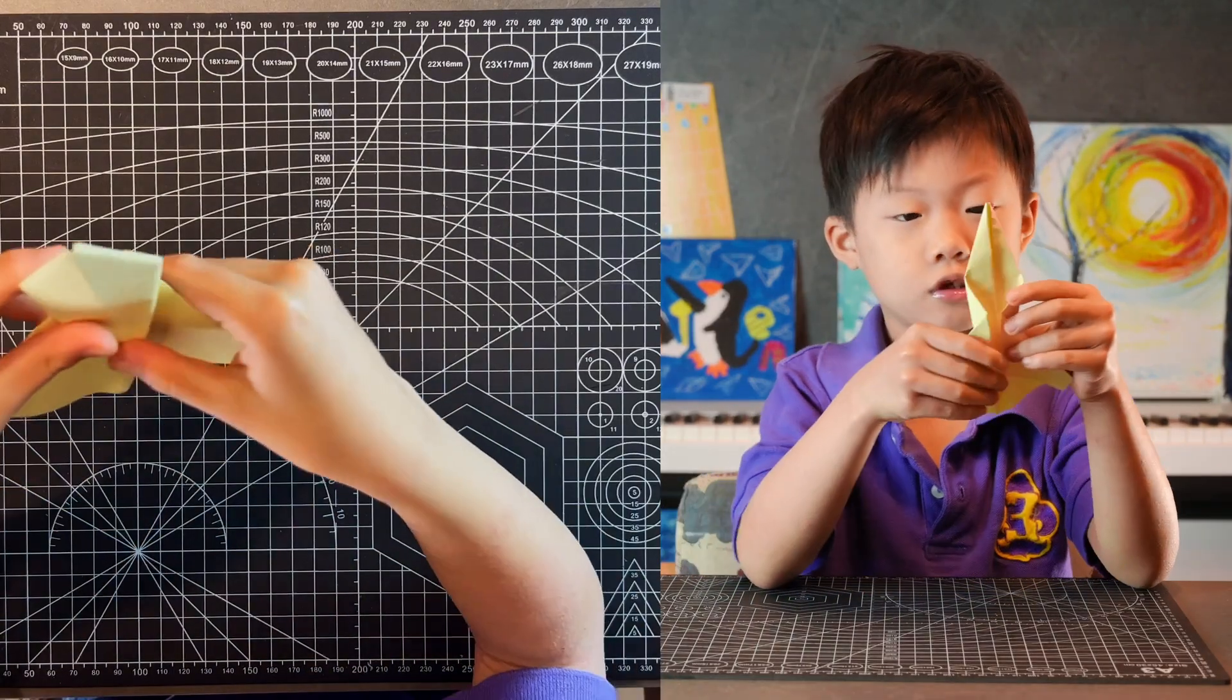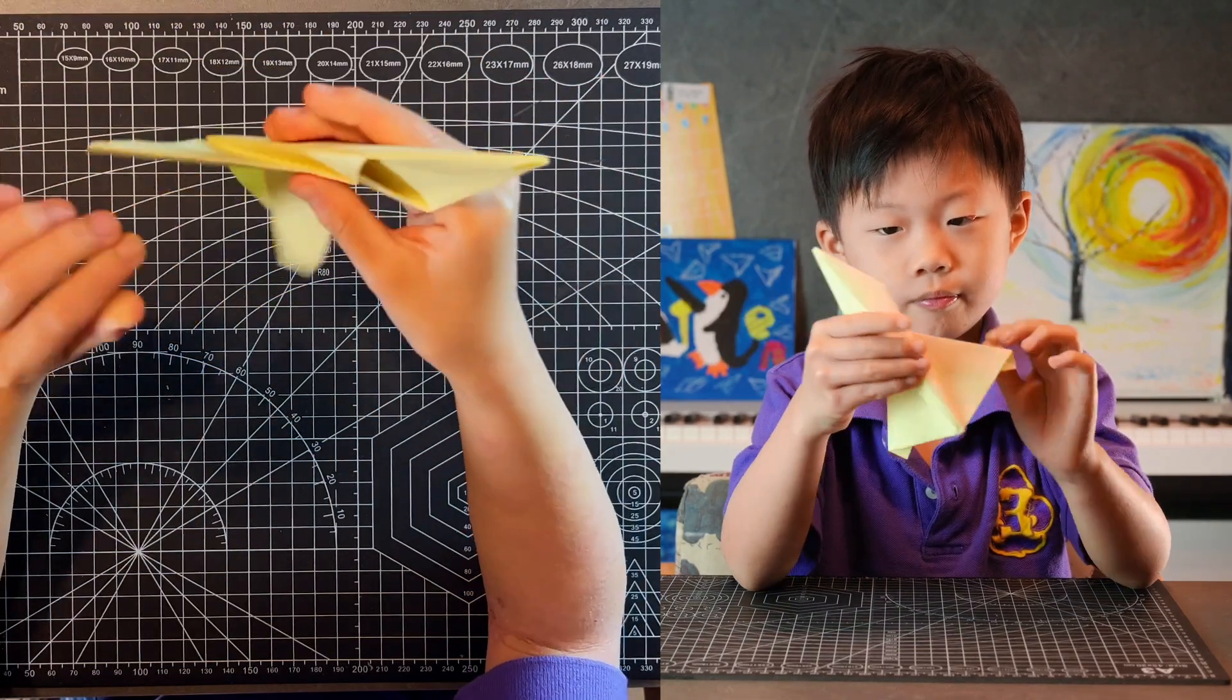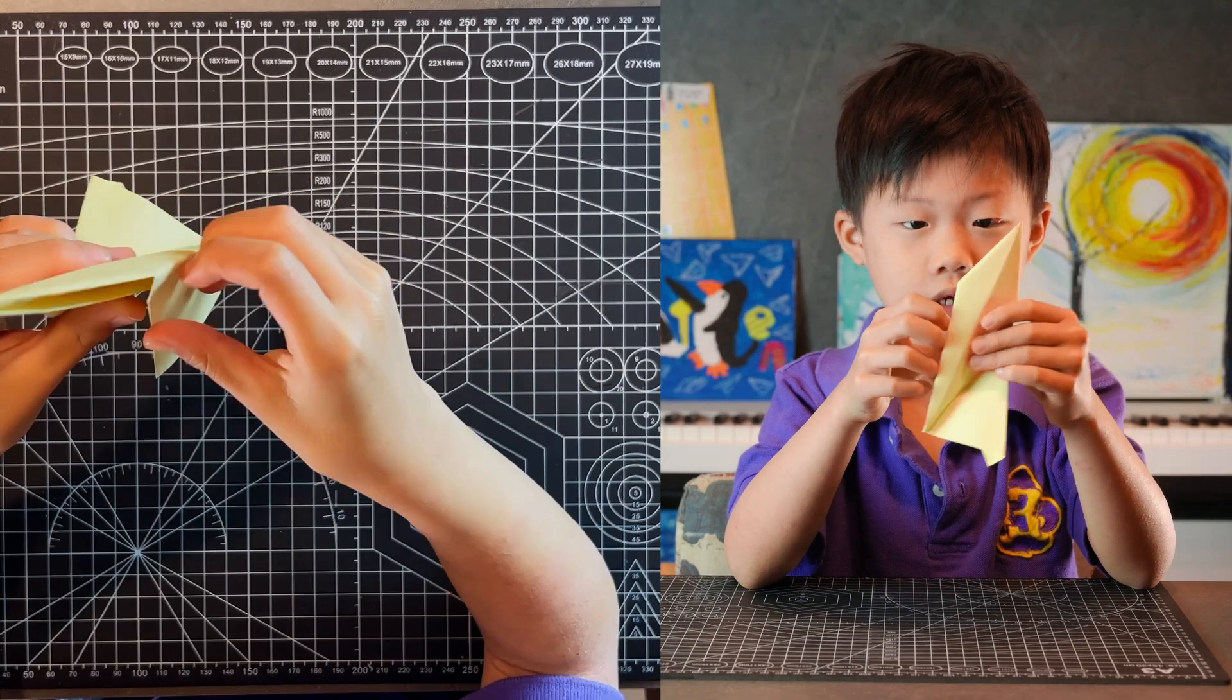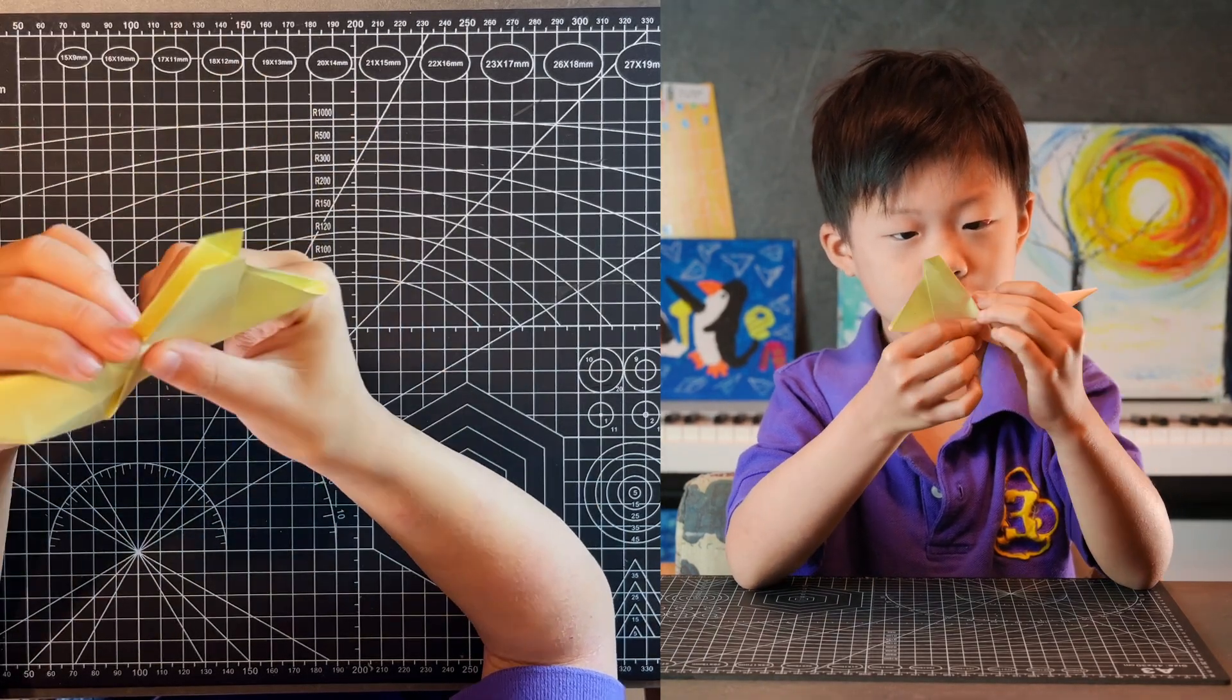And if you fold these two, you should have this very cool rocket shape that I like. Fold it in half again and fold these wings up. Open this up.